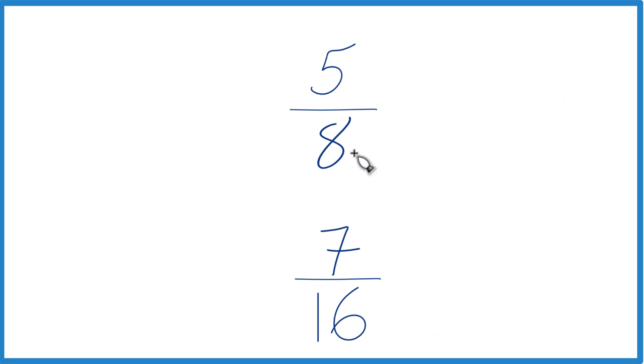The other way is to get a common denominator. Right now we have 8 and then 16. So, if we could get these to be the same number, we could just compare the numerators and we'd know which fraction is greater, 5 eighths or 7 sixteenths. So, let's do that.